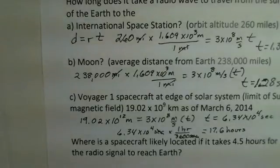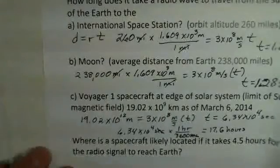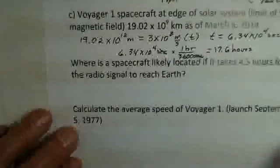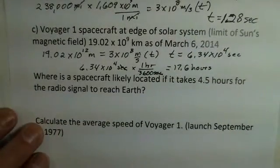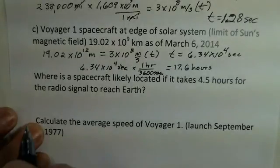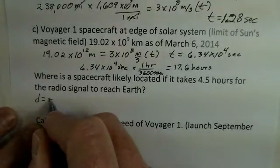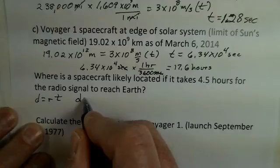So suppose we have a spacecraft and it's a 4.5 hour delay for the radio signal from that spacecraft to reach the Earth. Where might that spacecraft be located? It takes 4.5 hours for the signal to reach the Earth. Well, again, we use distance equals rate times time.